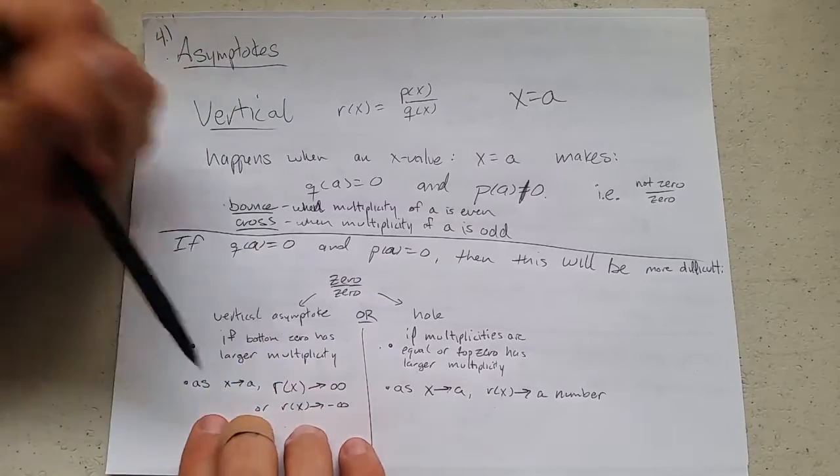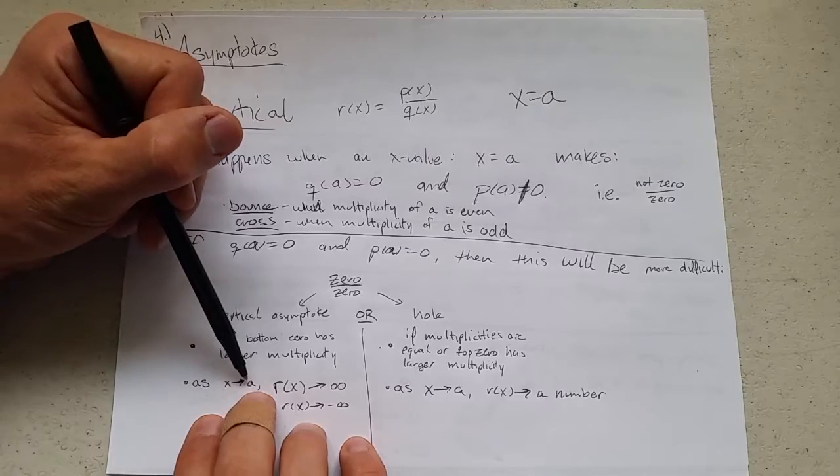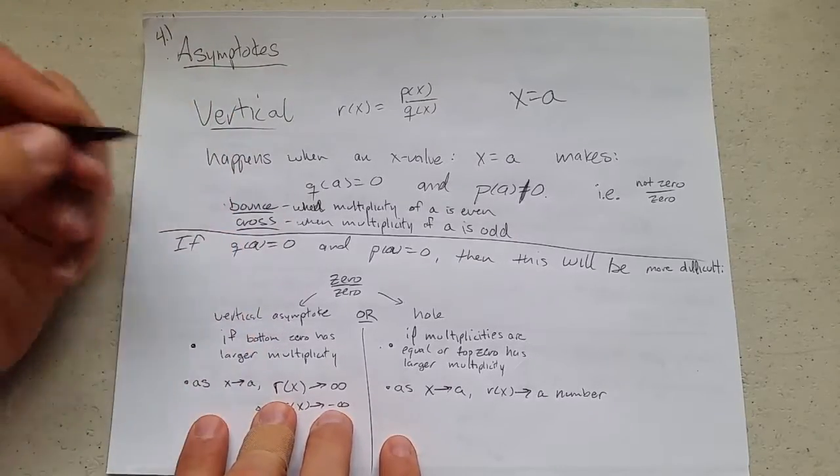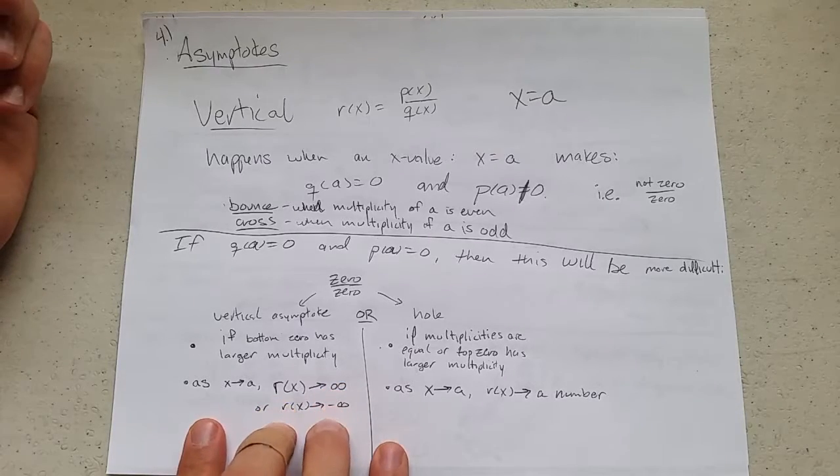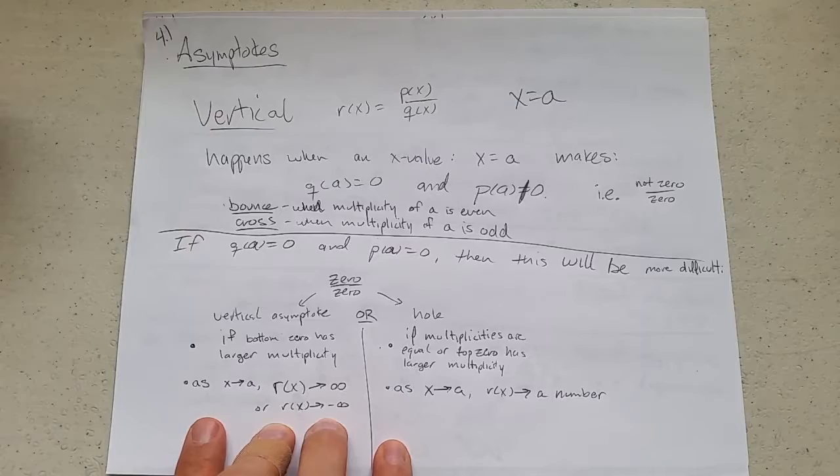Another way to see it happening, if x is getting closer to a, and your function value, r of x, is getting closer to either infinity or negative infinity, then you have a vertical asymptote.